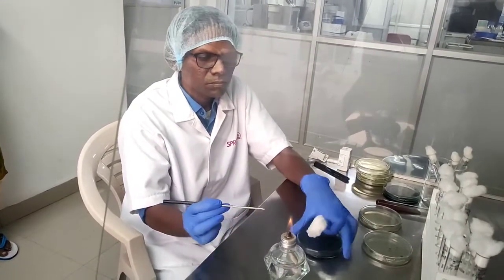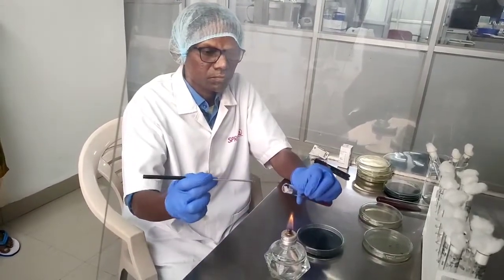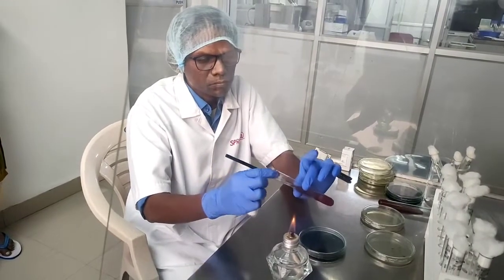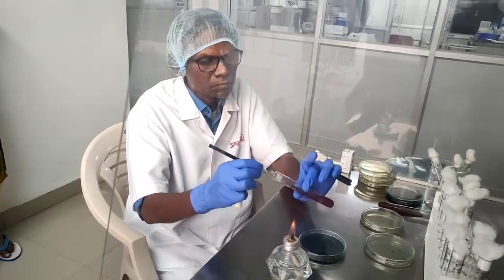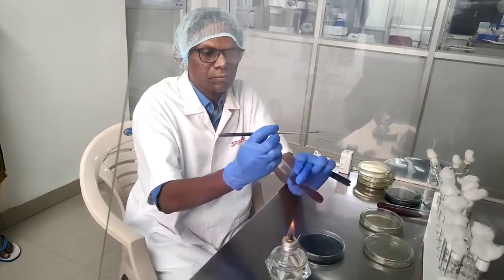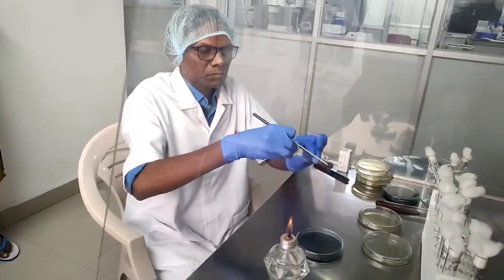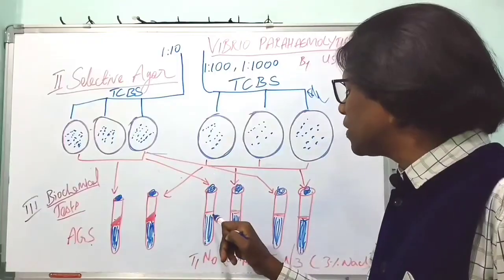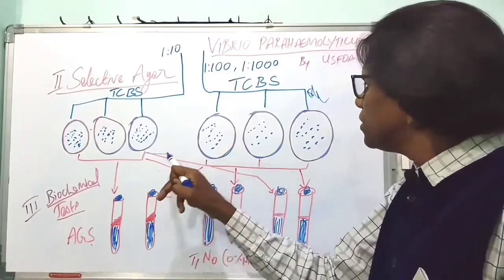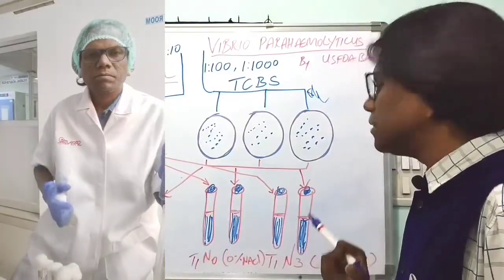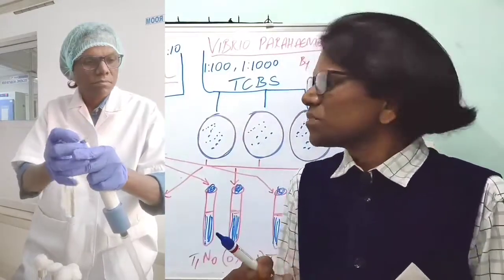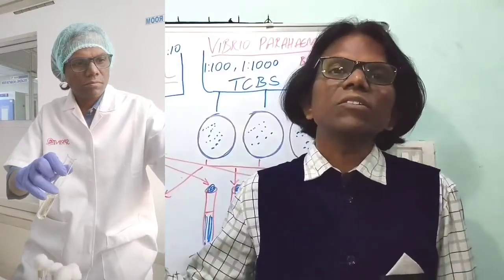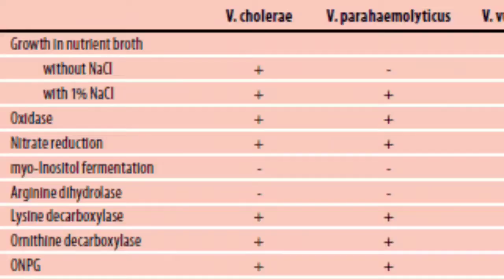In the same way, pick 1 or 2 suspected or suspicious colonies and transfer to T1N0, tryptone with 0% sodium chloride, and tryptone with 3% sodium chloride. Transfer the suspected colonies into T1N0 and T1N3. Keep it for incubation overnight. This is biochemical test and screening test. Then the next step, we will go for confirmatory test.